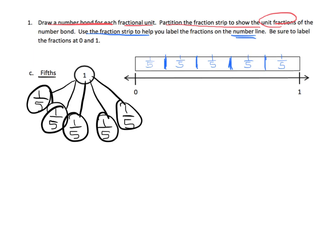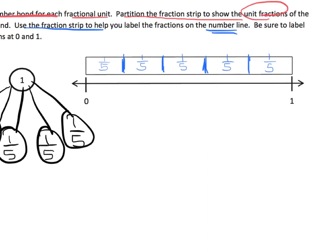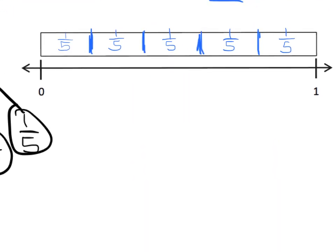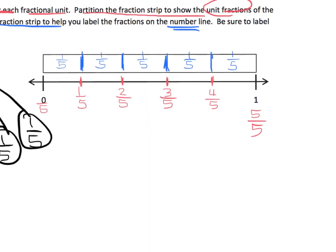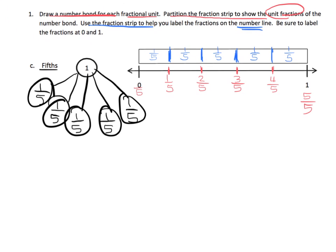On the number line, the intervals are going to go at the same places as on our tape diagram. When we label this: this is zero-fifths, one-fifth, two-fifths, three-fifths, four-fifths, and five-fifths. What's really interesting for third graders is that with a tape diagram we record the fifths inside the sections, but on a number line we record the fifths at the tick marks — that's something students have to get used to.